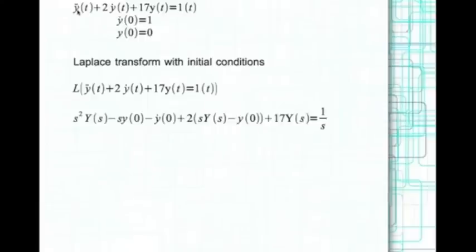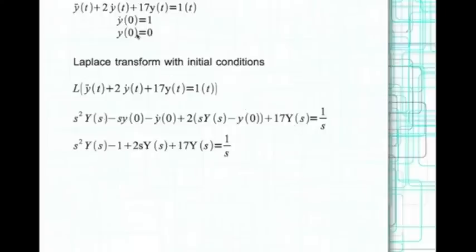We Laplace transform the entire equation. The Laplace transform of y-double-dot is s²Y(s) minus s·y(0) minus y-dot(0). The Laplace transform of y(t) is Y(s), and the Laplace transform of the step function is 1/s. Substituting the initial conditions y(0) = 0 and y-dot(0) = 1, we find an expression for Y(s).